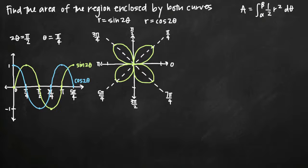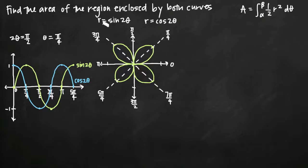Today we're going to be talking about how to find the area of the region enclosed by two polar curves — in other words, inside both of the curves. In this particular problem we've been given the polar equations r equals sine of 2θ and r equals cosine of 2θ.